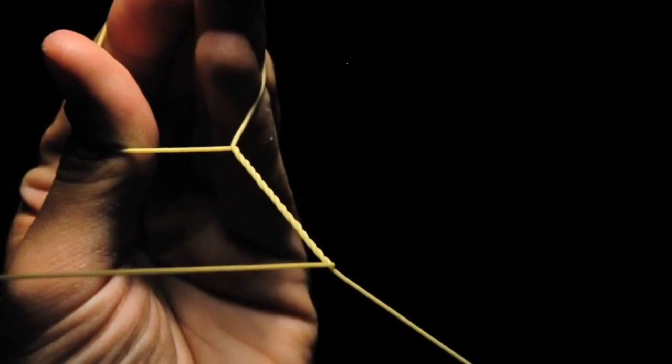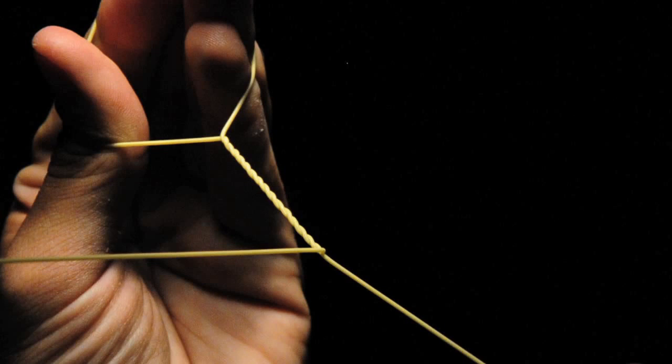Now the tricky part. What you want to do here is grab your tag end and stretch the two legs of the loop. The idea is to make your twist really tight which will allow the tag end to wrap over your twist.